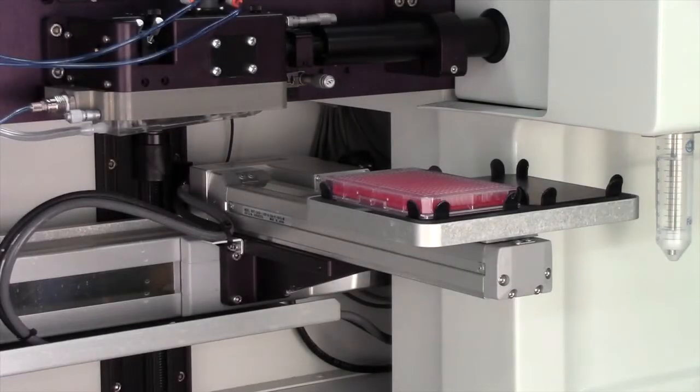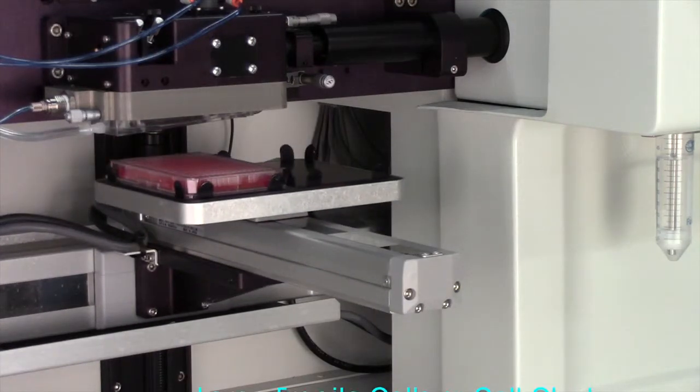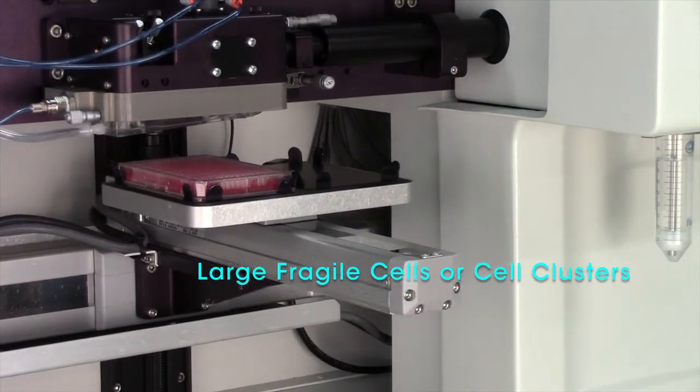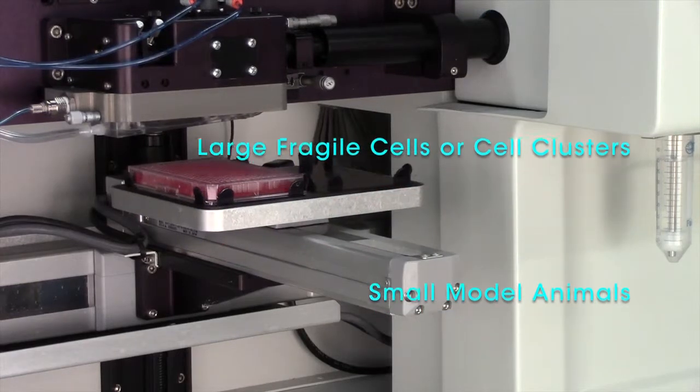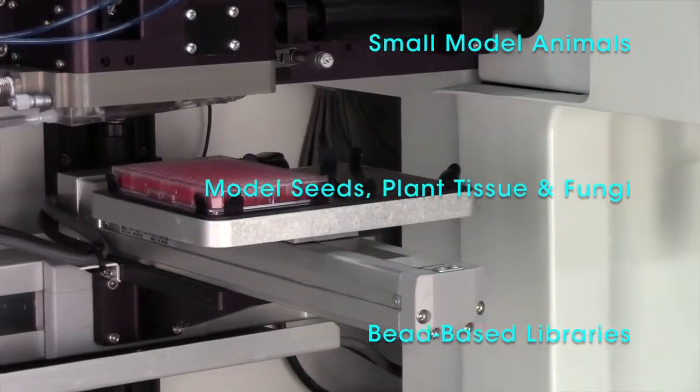Typical samples range from 1 to 1500 microns diameter and include large fragile cells or cell clusters, small model animals, model seeds, plant tissue and fungi, and bead based libraries.